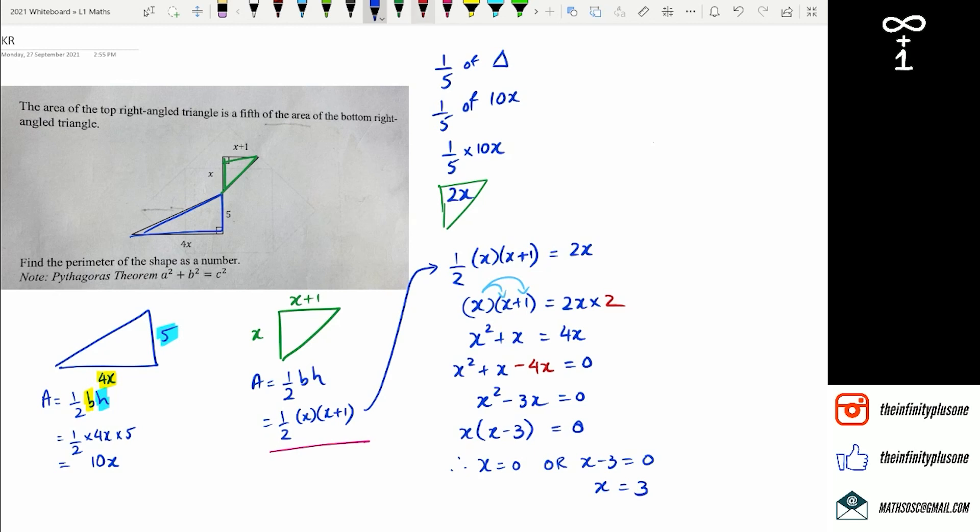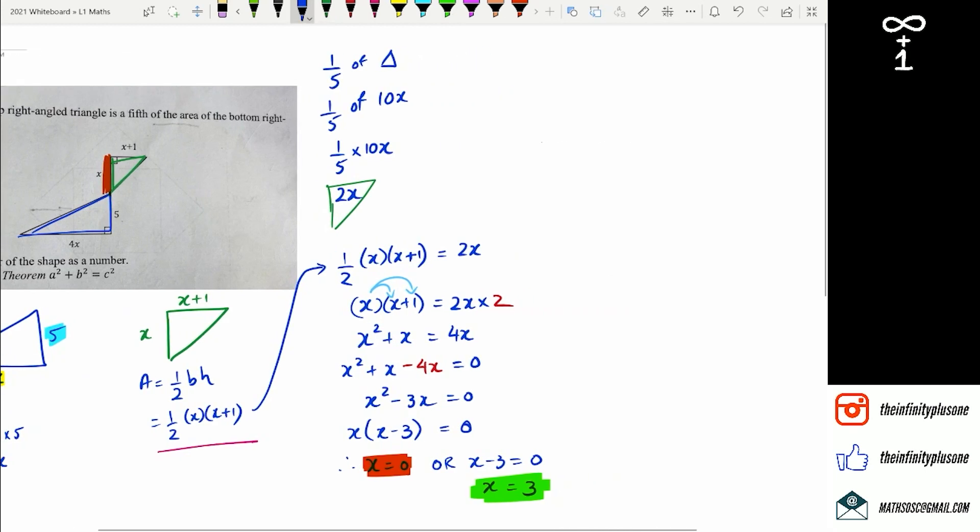Now, we have to ignore, in this case anyway, we need to ignore x equals 0. Because you can't have a length of x equals 0. So the one that we're going to go with is x equals 3. You need to mention that somewhere. So I might just mention it here. x can't be 0. Therefore, x equals 3.